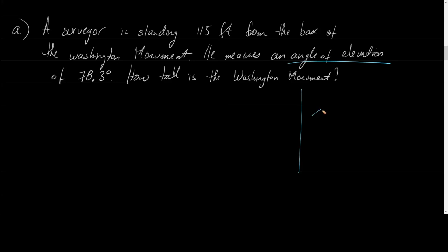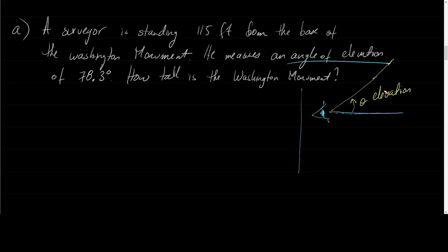Let's say this is our eye. If the eye is looking straight outward, the angle of elevation is whatever angle you need to tilt upward to look at a fixed point. That angle is the angle of elevation — because you have to elevate your eyes to see it. If you need to look downward, that angle would be the angle of depression.